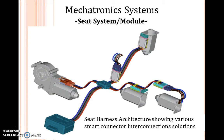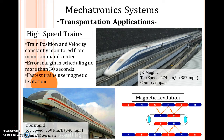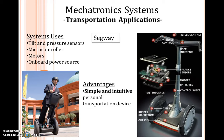The seat module is also part of mechatronics systems. In transportation, a great deal of mechatronics is used — a basic example is high-speed trains. The train's position, velocity, margin, and speed can be totally controlled with mechatronics even at speeds near 574 km/h. As shown in the figure, the system uses pressure sensors, microcontrollers, motors, and on-board power sources. The advantages include a simple and intuitive personal transportation device now seen in many big malls.